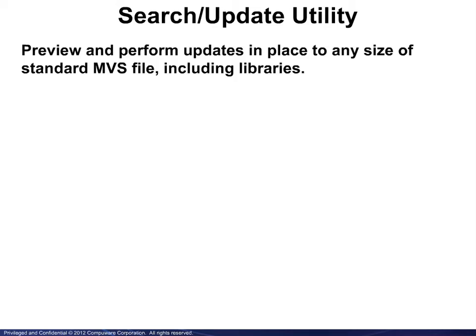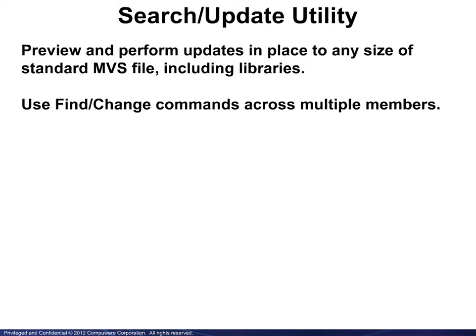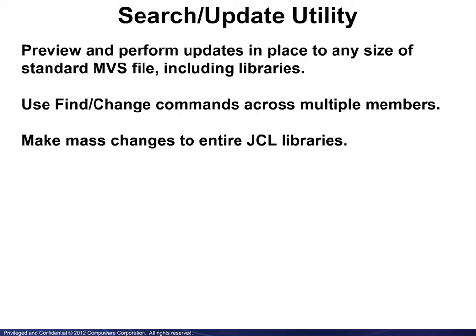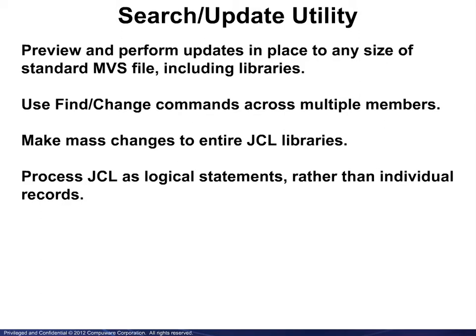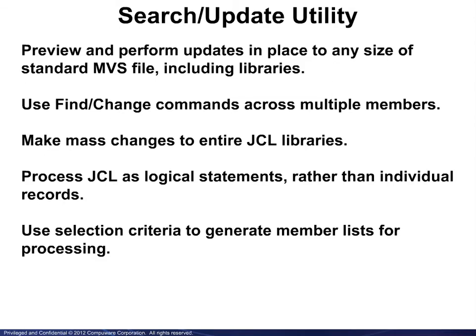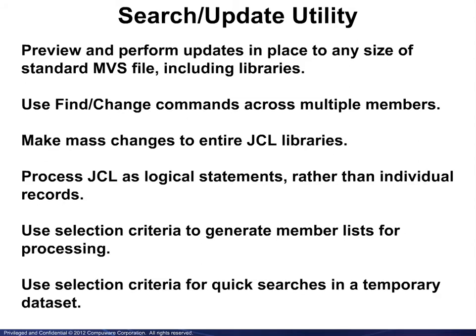The Search Update Utility provides extended browse and edit capabilities allowing you to do the following: preview and perform updates in place to any size of standard MVS file including libraries; use find and change commands across multiple members; make mass changes to entire JCL libraries; process JCL as logical statements rather than individual records; use selection criteria to generate member lists for processing; and use selection criteria for quick searches in a temporary data set.